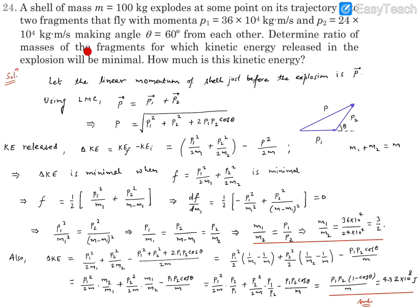We want this released energy to be minimal. P1, P2, and theta are all given, so P is known and M is known, making P²/2M a fixed number we cannot change. However, M1 and M2 are variable — they only need to satisfy M1 + M2 = M. So to minimize ΔKE, we need to minimize the term F = P1²/2M1 + P2²/2M2.